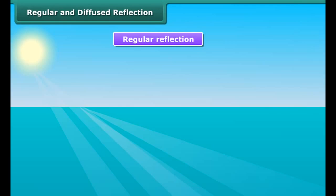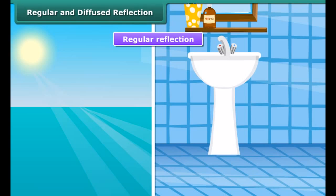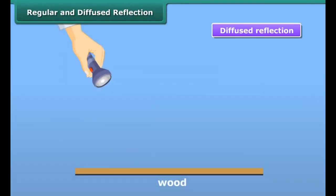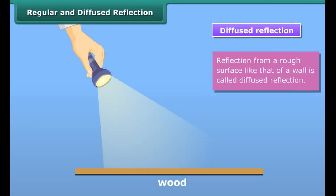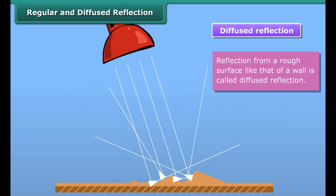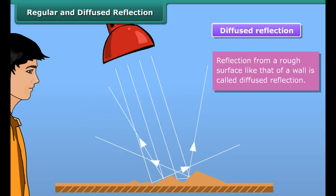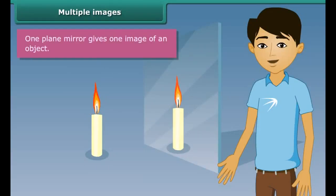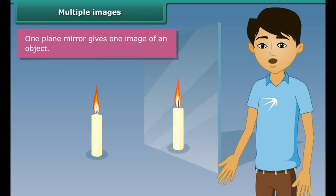We now know that light falling on an object is reflected. Reflection from a smooth surface like that of a mirror is called regular reflection. Reflection of light from the water surface and highly polished floors are also examples of regular reflection. Images are formed by the regular reflection of light. Diffused or irregular reflection takes place when a ray of light is incident on a surface such as a wall or wood, which is not smooth or polished. An image is not formed in this case. The different portions of the surface reflect the incident light in different directions. The light sent to our eyes by most of the objects we see around us is due to the diffused reflection from their surfaces.